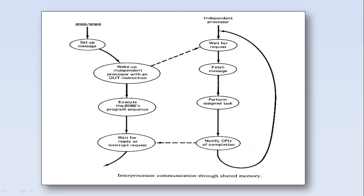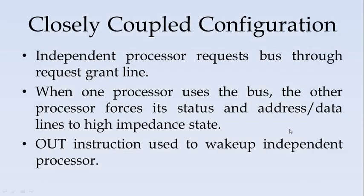The 8086 program sequence uses standard 8086 assembly programming, while the independent processor has its own programming language and different instruction set. In the closely coupled configuration, the independent processor requests the bus using the bus request and grant lines. When one processor uses the bus, the other should not; it forces its status, address, and data lines to the high impedance state, which is virtually a disconnected state. The OUT instruction is used to wake up the independent processor.